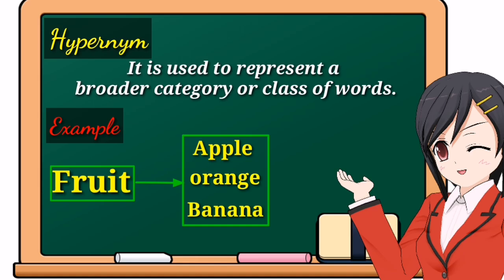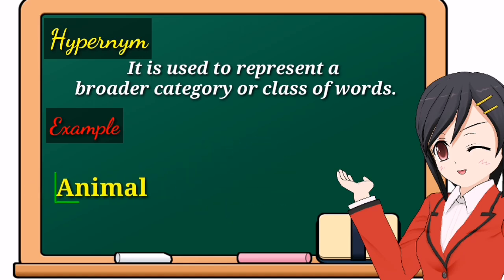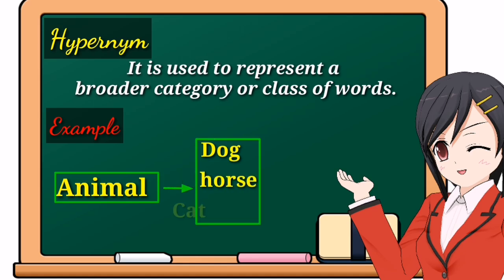Another example: look at the term 'animal.' This word is a hypernym of dog, horse, and cat. I call it a hypernym because these are the subcategories of animal — horse, dog, and cat all fall under animal. That is why animal is a hypernym of these words.